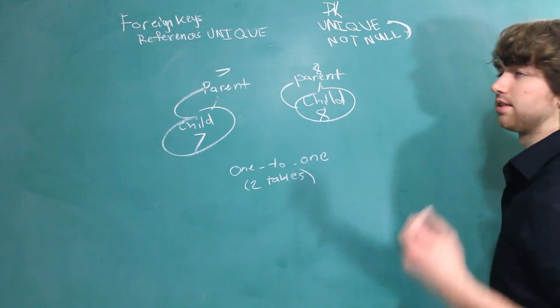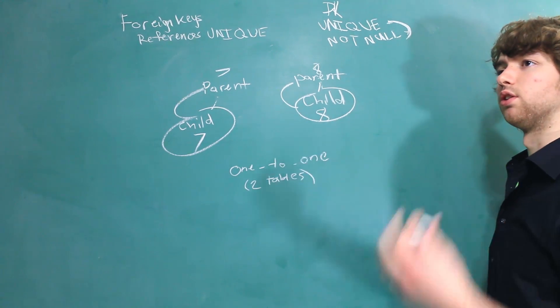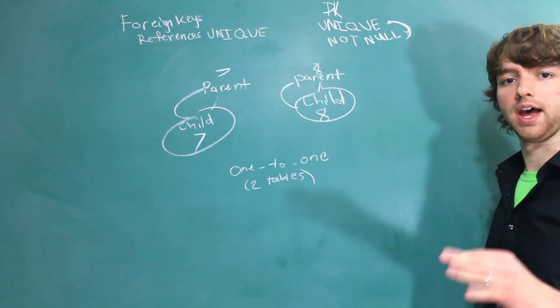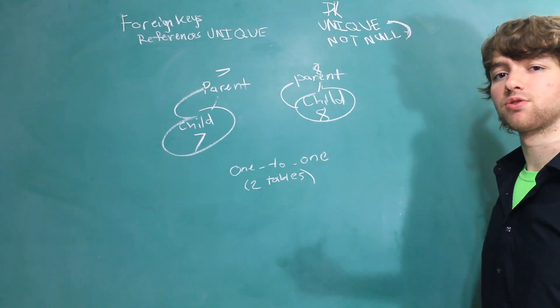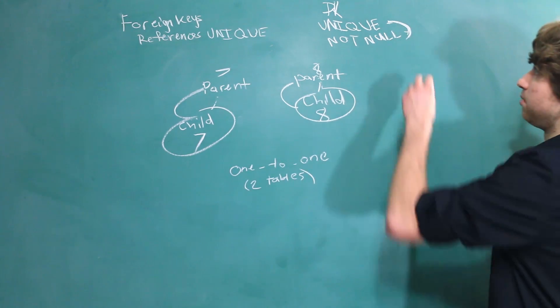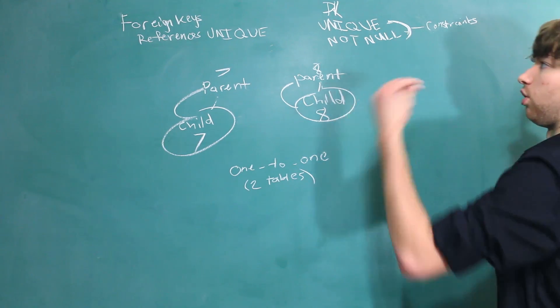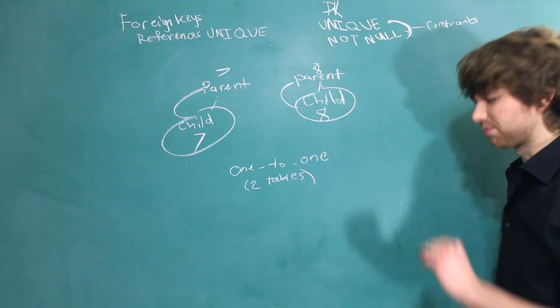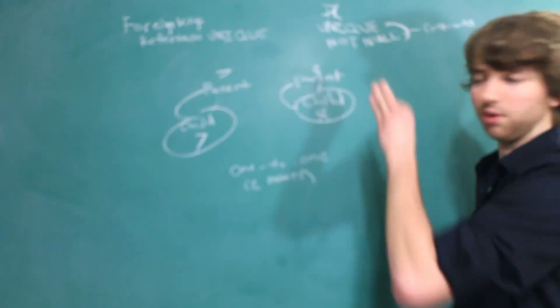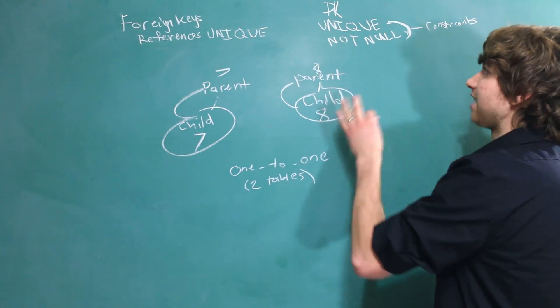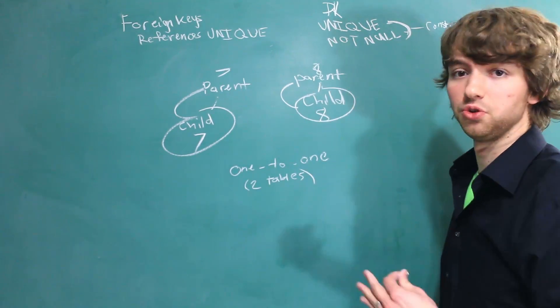And I call these attributes. That's another name, but there's a slight difference, and we'll discuss that in a future video. But essentially, an attribute can be a constraint. These are both examples of constraints, but not all attributes are constraints. Sorry, kind of off topic, so don't worry about that. But that's what the unique constraint is going to do.